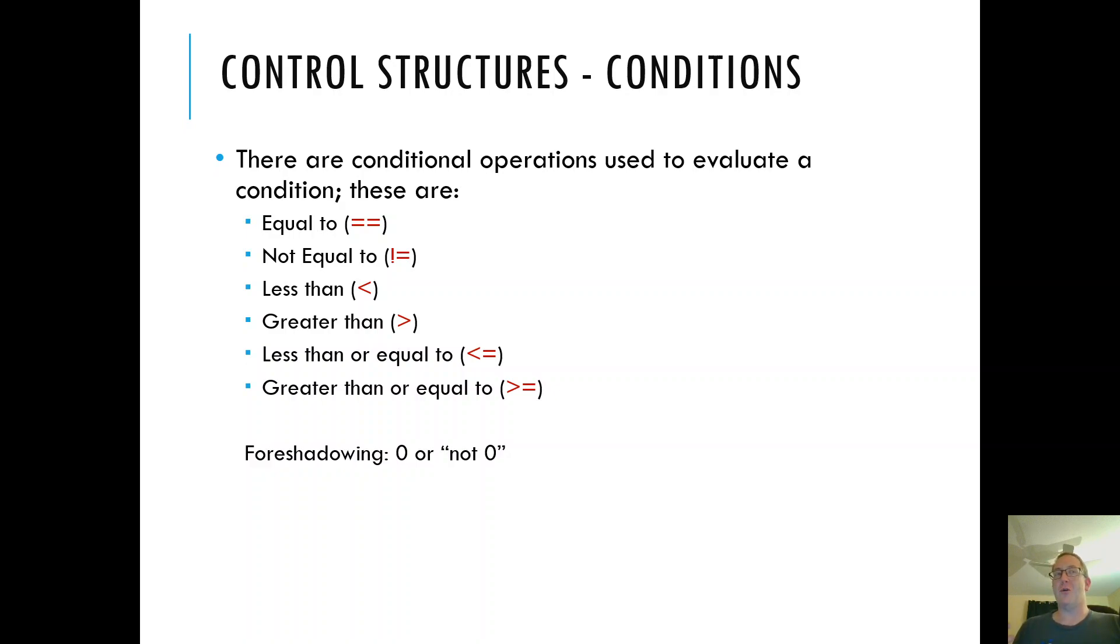When I do C, when I check to see whether two things are equal, when I check to see if variable X is less than Y, I get either a zero, meaning it's false, or I get a not zero, meaning it's true.